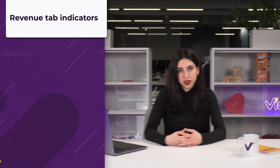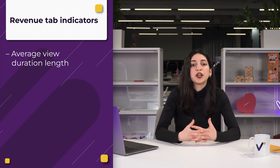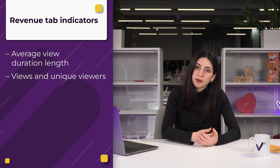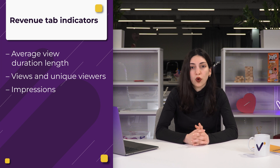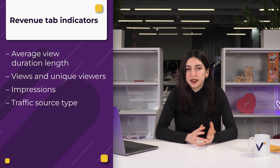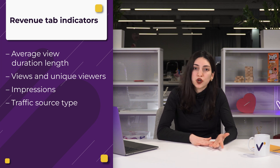Now you know what is included in each tab of YouTube Analytics, but which metrics should you pay more attention to? Here are six key metrics that are important. The first one is average view duration length, displayed in seconds and minutes watched. Then, views and unique viewers, to see how many times your channel was viewed. Then impressions — it will help you understand which video covers, in other words thumbnails, worked in YouTube algorithms as well. Traffic source type will help you to identify where your audience comes from, like suggested videos, YouTube search, channel pages.